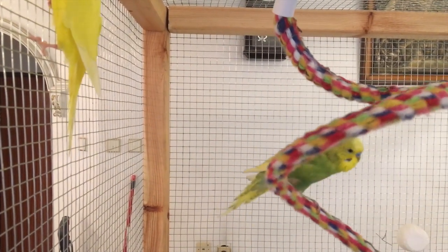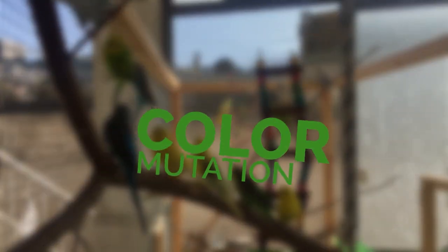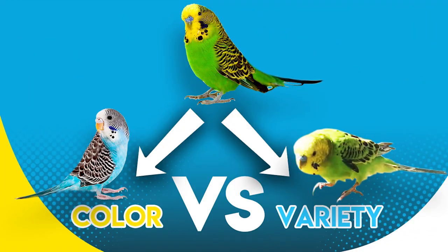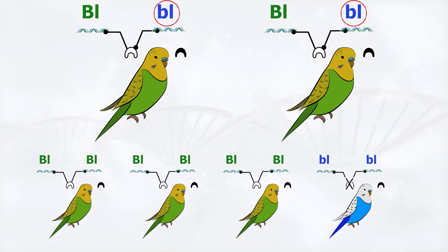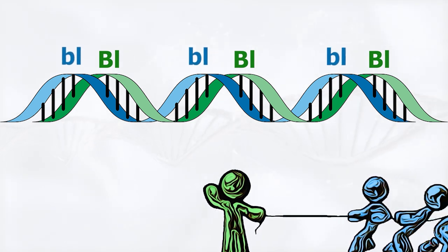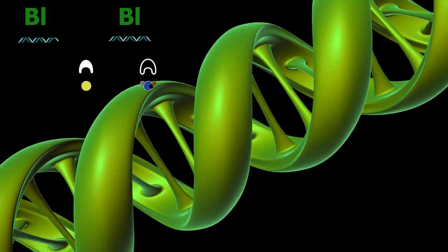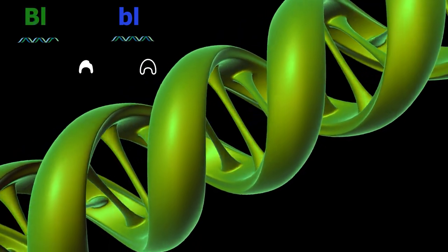We did talk about the difference between color mutation and variety mutation in a previous video — I'll keep a link in the description below. We also talked a lot about colors in the documentary, which I will link in the description as well. But when it comes to colors, there are many mutations; however, in this video we will concentrate on the dark factor gene.